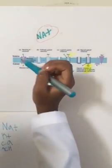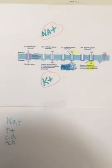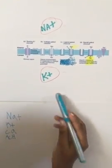This is the plasma membrane. Outside the cell is a high concentration of sodium. Inside the cell is a high concentration of potassium. Outside the cell is positively charged, and inside the cell is negatively charged.